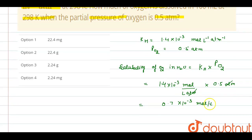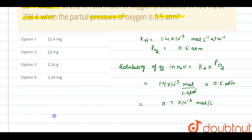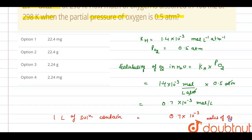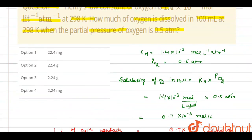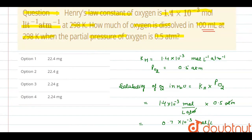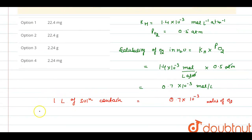This is the value of solubility — and since solubility is nothing but molarity, 1 litre of solution contains 0.7 × 10⁻³ mol per litre. In this question, we have to find out this value in 100 ml. For 100 ml, this value will be 0.7 × 10⁻³ × 0.1, because 100 ml equals 0.1 litre.